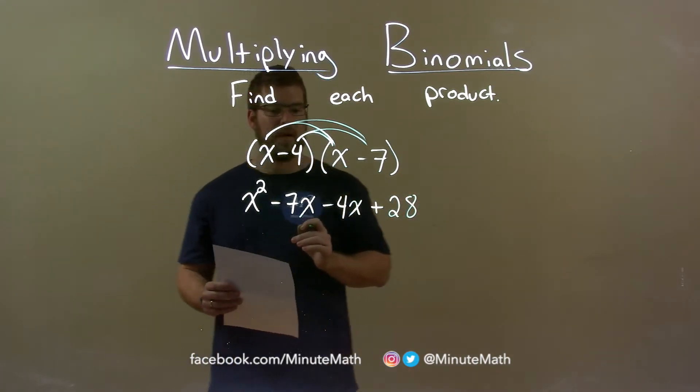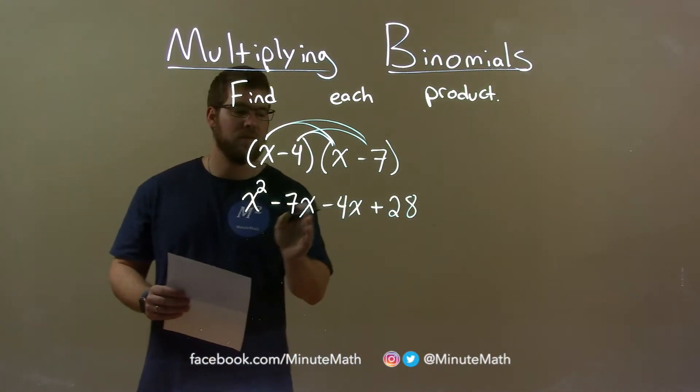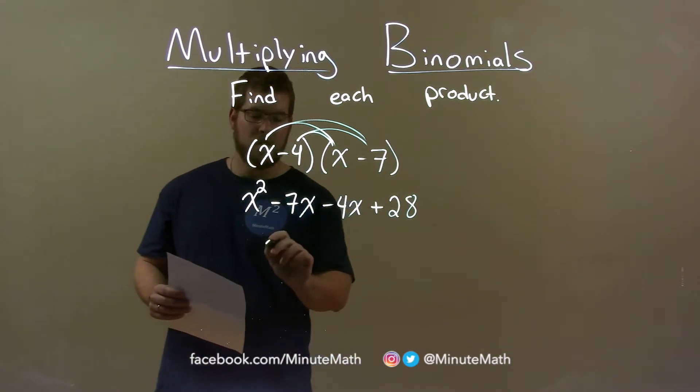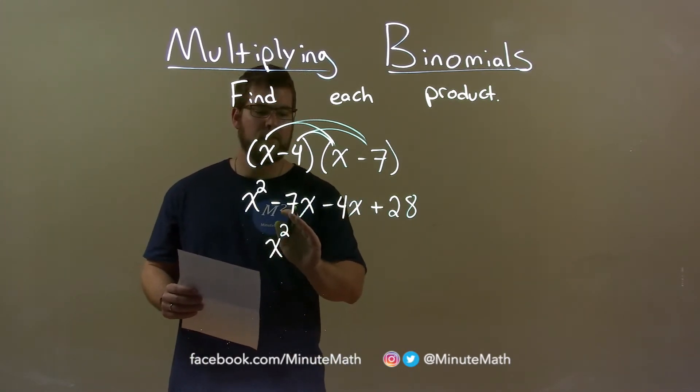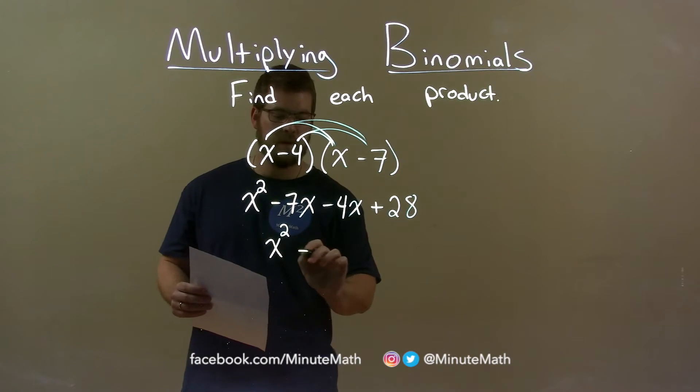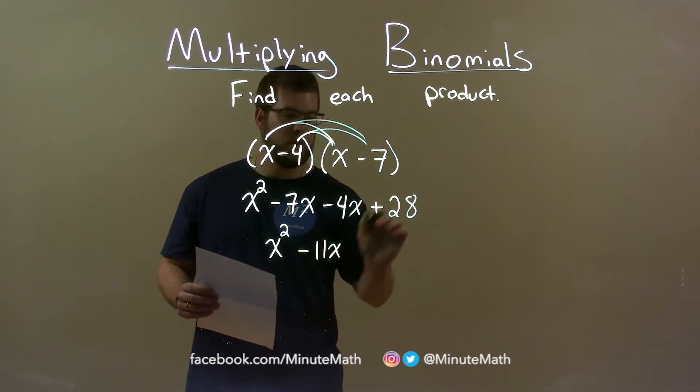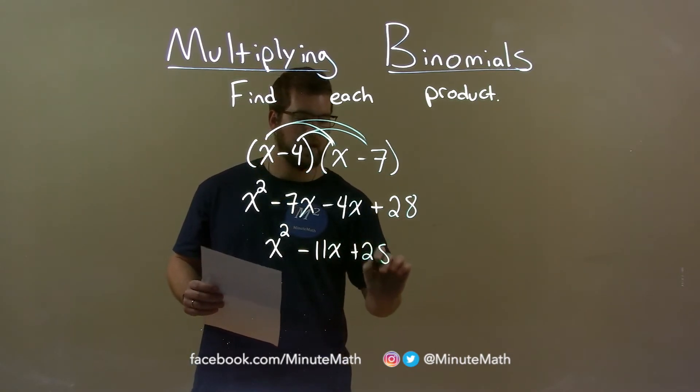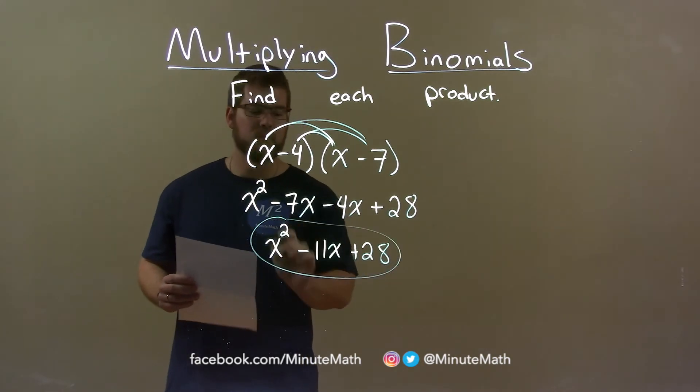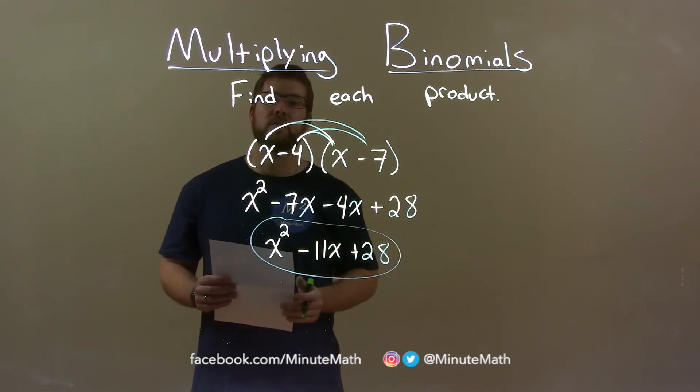We want to now combine our like terms, which is just the minus 7x and minus 4x. x squared comes down. Minus 7x minus 4x is minus 11x. Bring down the plus 28. And our final answer is x squared minus 11x plus 28.